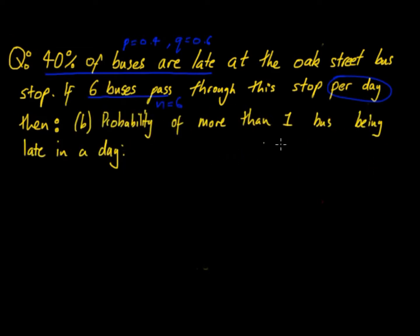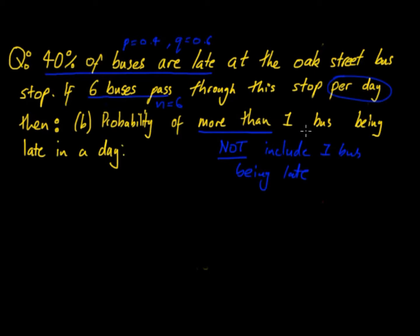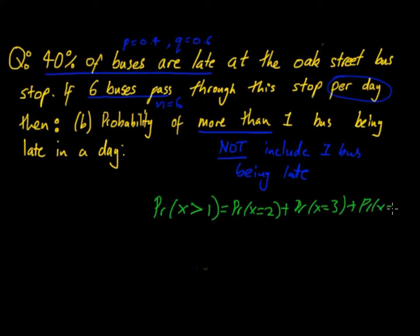Next question: the probability of more than one bus being late in a day. The important thing about 'more than' is it does not include one bus being late, but it includes two, three, four, five, and six buses. If we calculated it directly, we'd need P(X=2) + P(X=3) + P(X=4) + P(X=5) + P(X=6), which takes a long time, especially by hand. There is a quicker way.